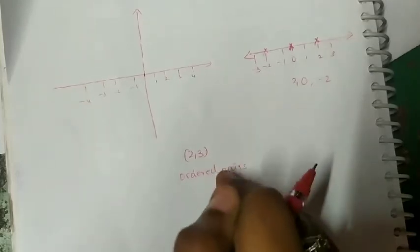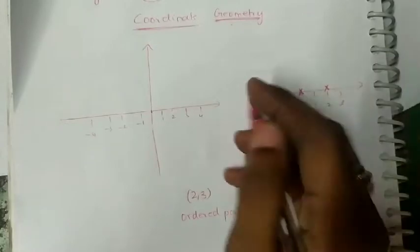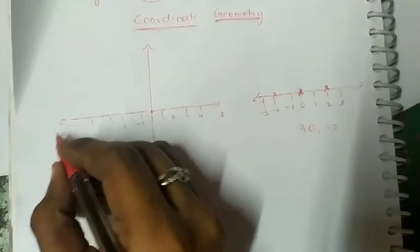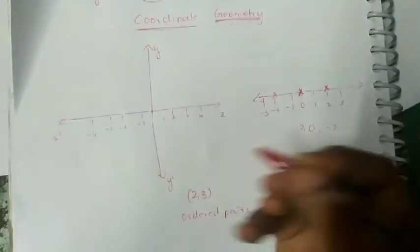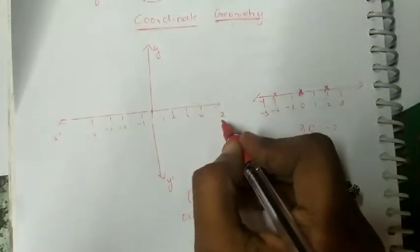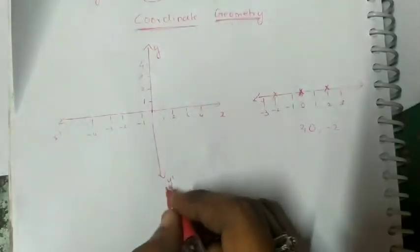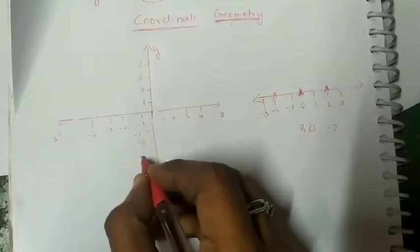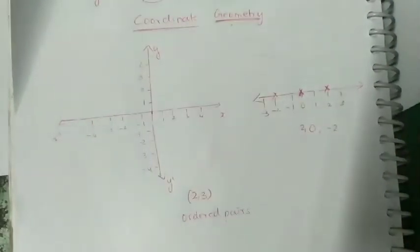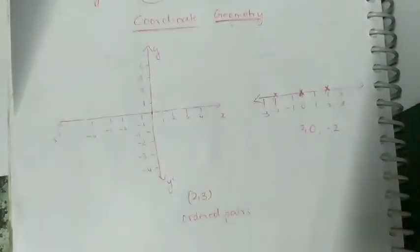So how can you plot this ordered pair? You can mark this as x-axis and this as x-dash. This is y-axis and this is y-dash. x refers to the positive numbers, x-dash refers to the negative numbers. y refers to positive numbers and y-dash refers to negative numbers. This is the basic of the graph. You can use a scale to draw the x and y axes, and then just draw the axes like this.